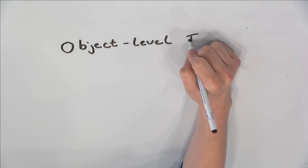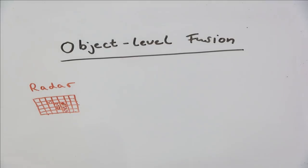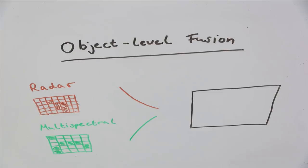In object level fusion, an algorithm uses both multispectral and radar imagery to cluster similar pixels into objects. These objects can then be labelled during later analysis.